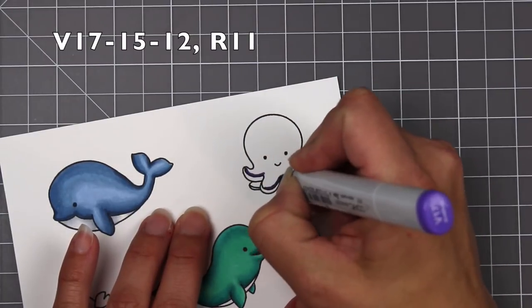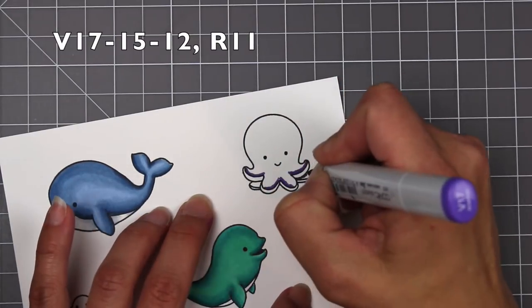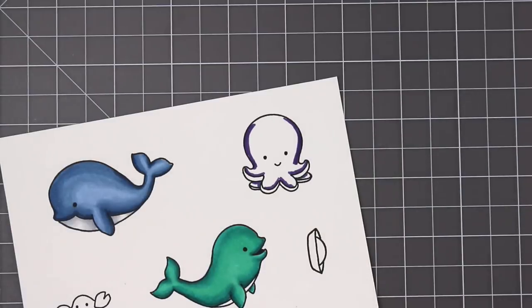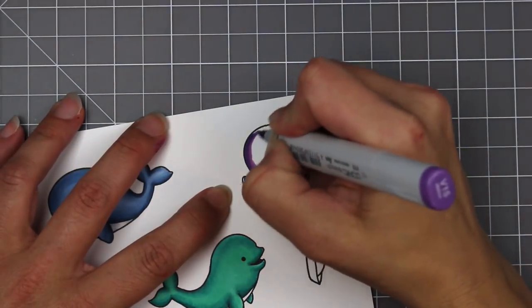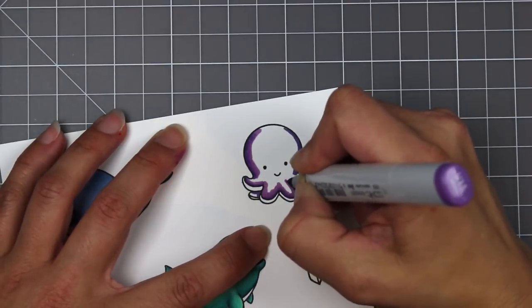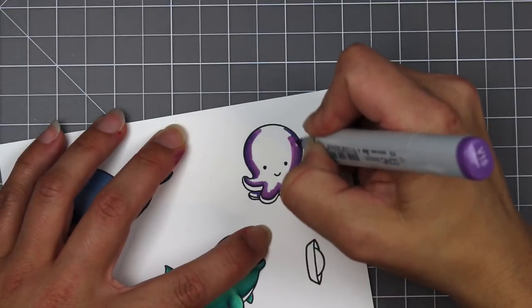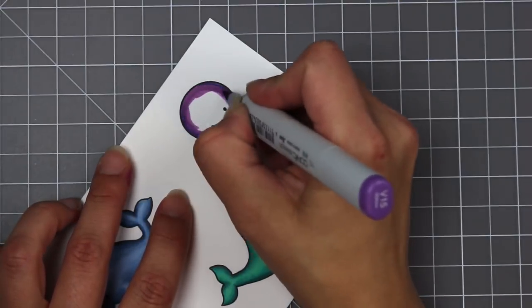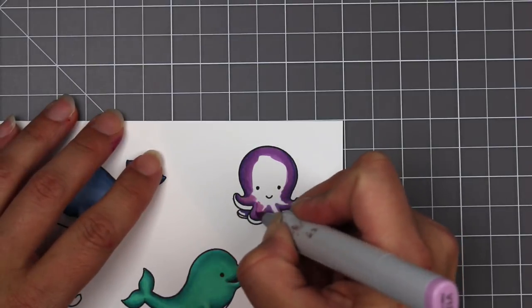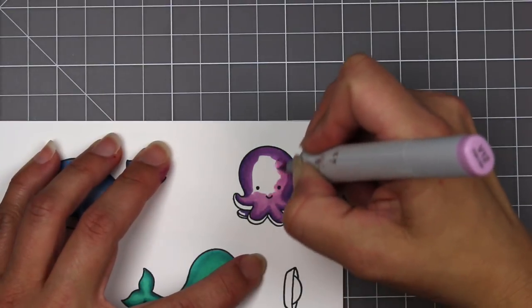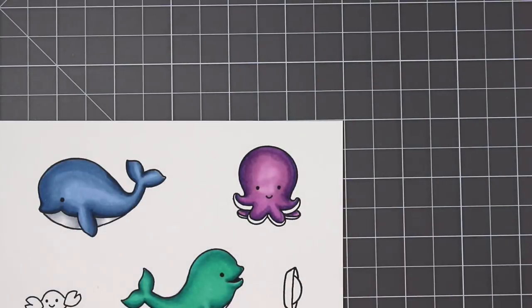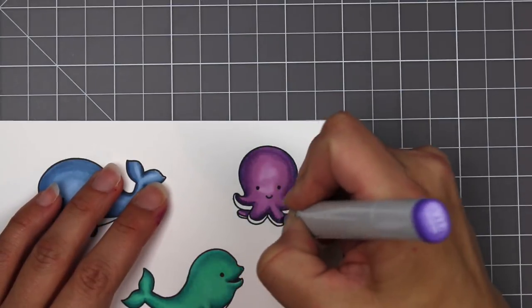So now we'll start on the octopus in which I decided to color it purple. I kind of wanted to have a nice color variety of critters on my card. So I'm coming in with the V17, 15 and 12. And I'm starting out just with that darkest color, throwing in some shadow areas, and then blending that out with my V15. And then I'll follow it up with the V12 to blend everything out. I do end up using the R11 for the underside of the octopus. I didn't do any shading down there just because those were really small areas.